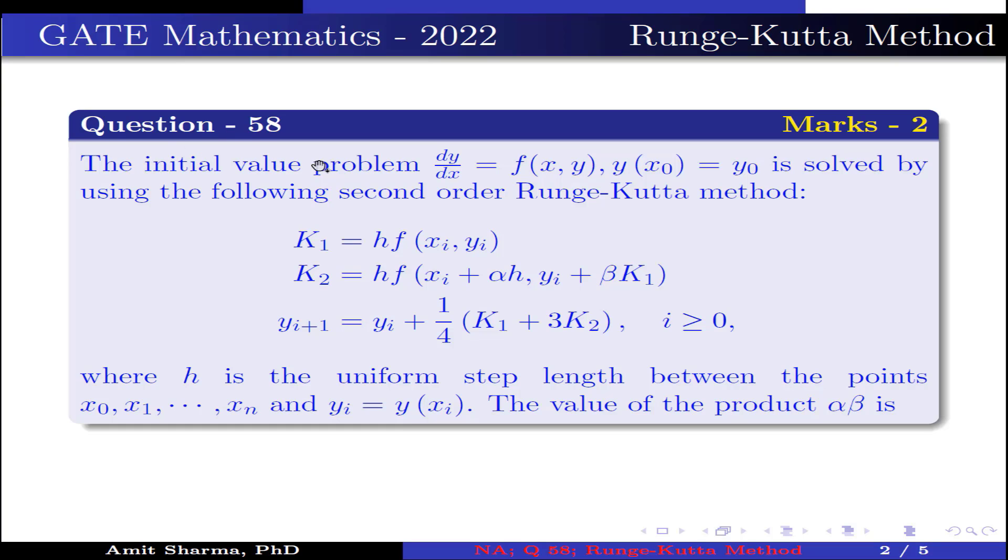Question is, the initial value problem dy/dx = f(x,y), y(x0) = y0 is solved by using the following second order Runge-Kutta method: k1 = h·f(xi, yi), k2 = h·f(xi + αh, yi + βk1), yi+1 = yi + 1/4(k1 + 3k2), where i ≥ 0, where h is the uniform step length between the points x0, x1, ..., xn and yi = y(xi). The value of the product αβ is,